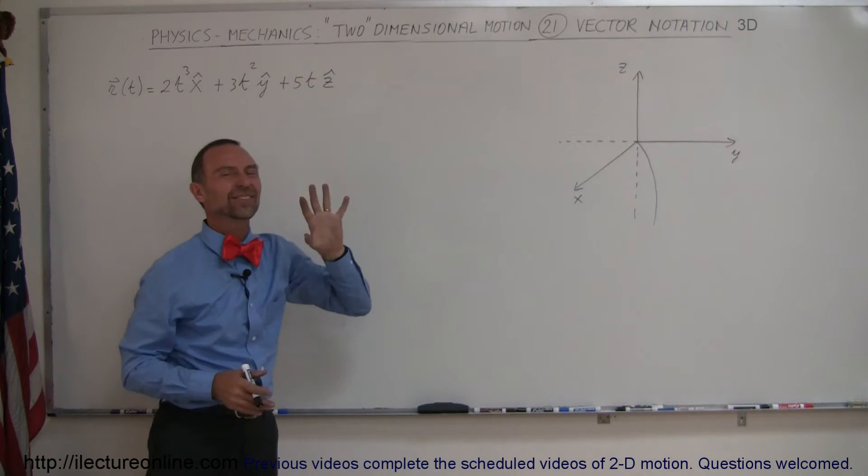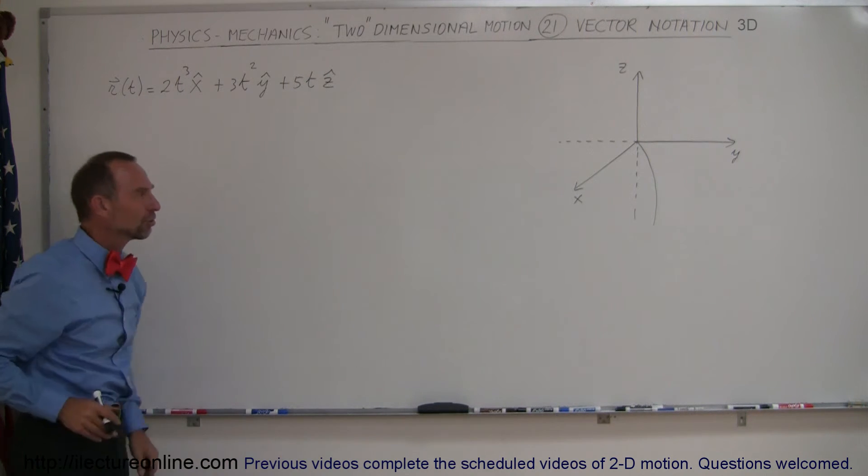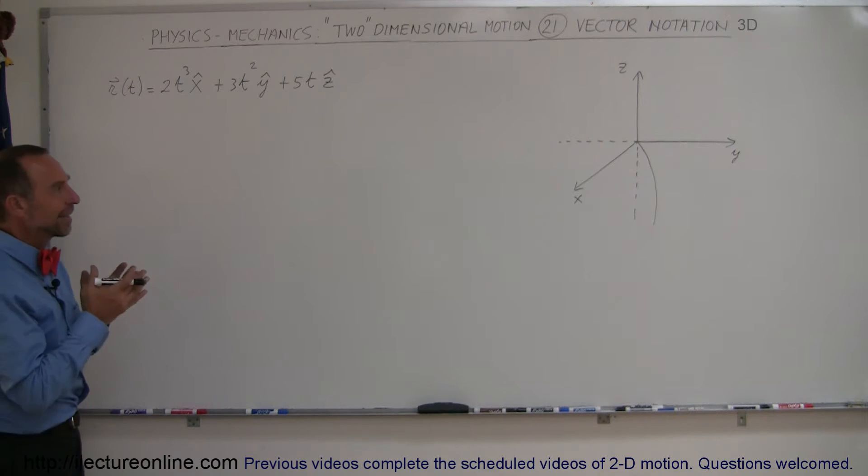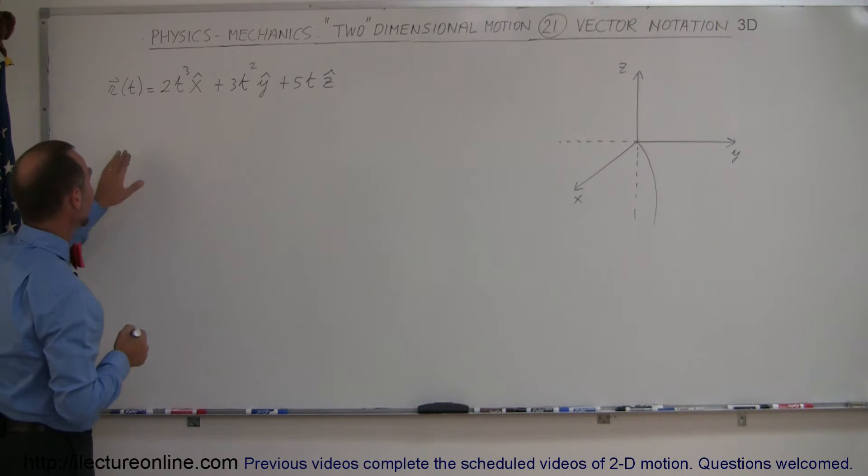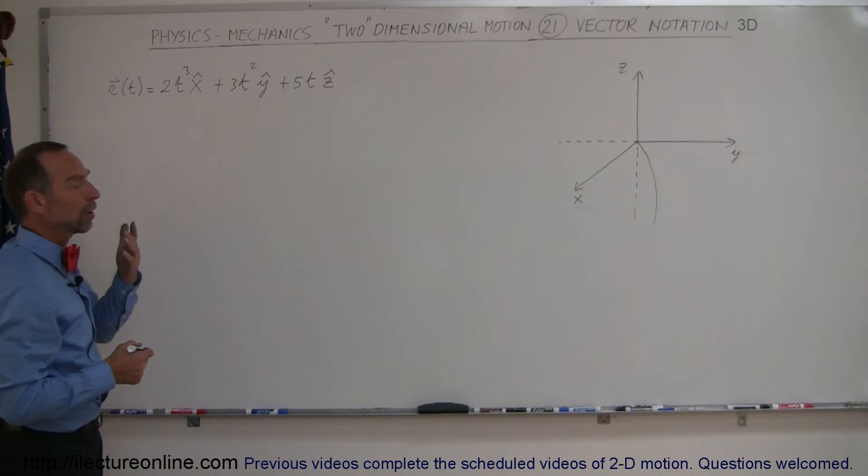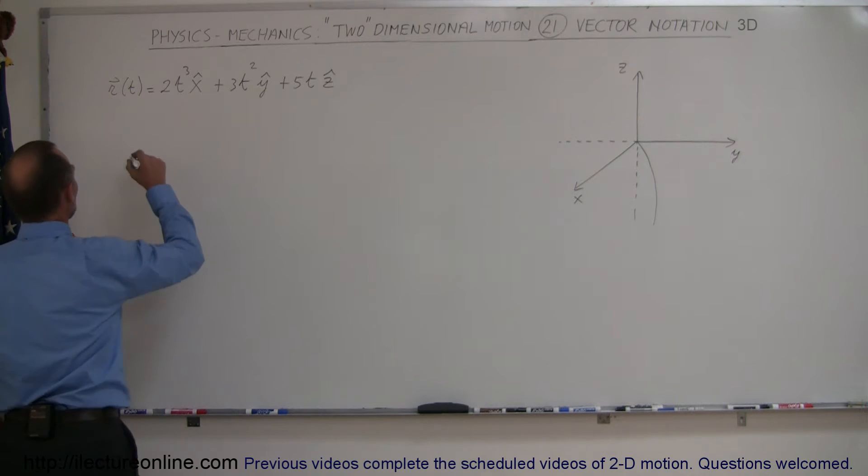That's why I put 'two' in quotation marks, just to indicate that it's the same principle. I drew a three-dimensional graph so we can try to see what that really would look like in the real world. So if this is our position vector, what would our velocity vector look like?